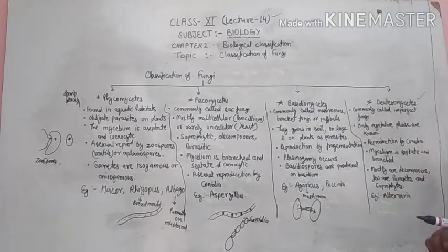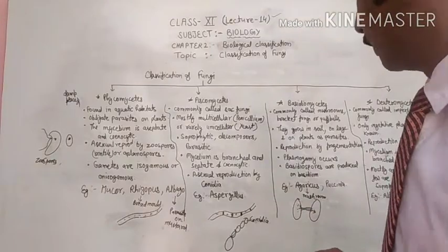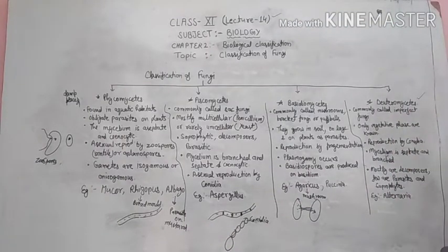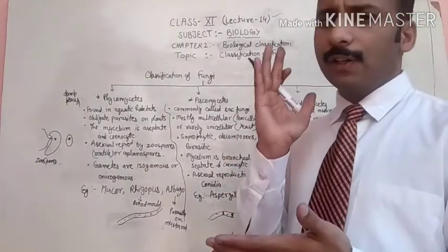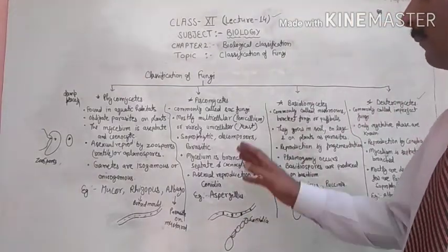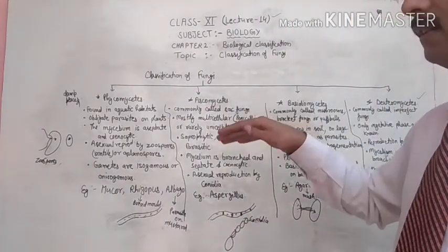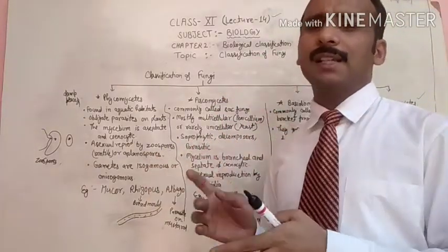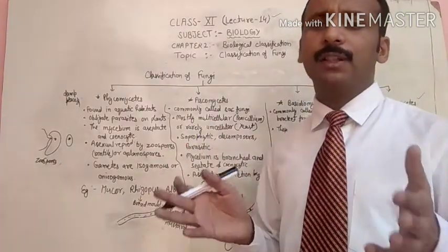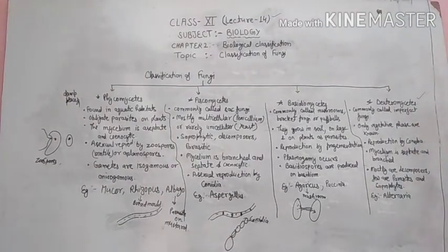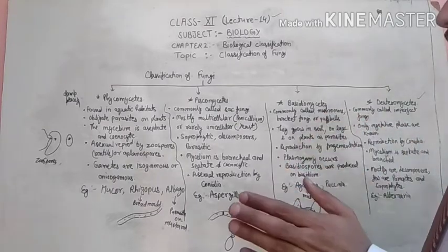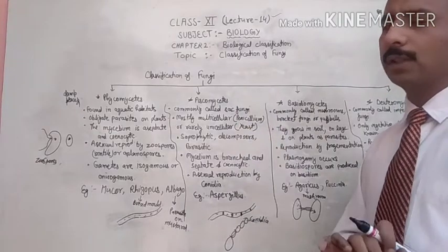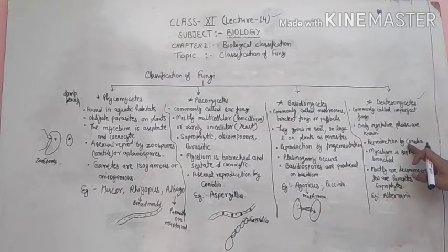The fourth group is Deuteromycetes, commonly called imperfect fungi. When the structures of a fungus cannot be identified with any other group, it is kept in Deuteromycetes. Only the vegetative phase is known for these fungi. If a sexual phase is discovered, they would then be reclassified into Ascomycetes or Basidiomycetes.